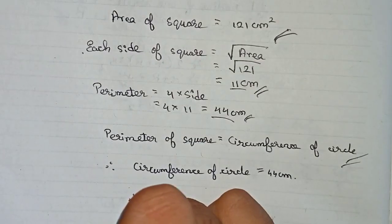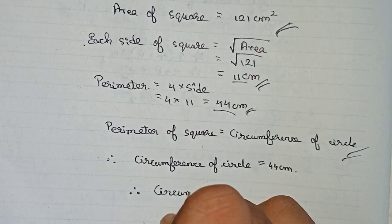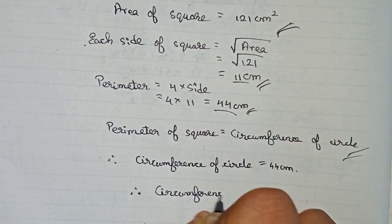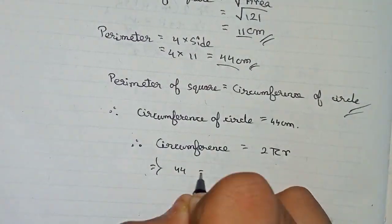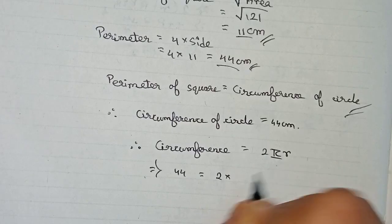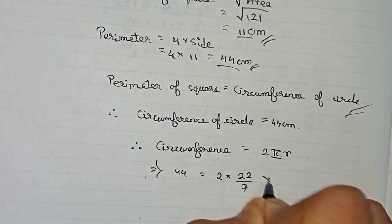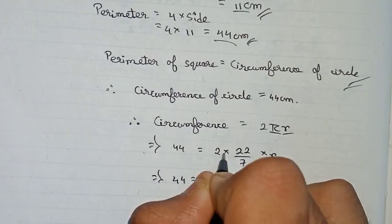So therefore you can say that circumference is equal to 2πr. Apply the formula, put down the value. Circumference is 44, 2 into π, 22 by 7 into radius that is unknown.